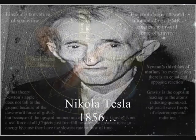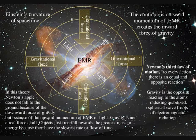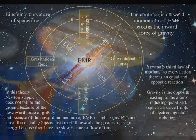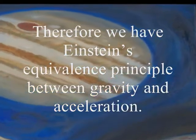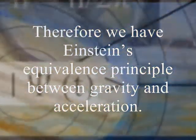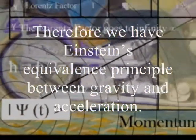In this theory, gravity is a secondary force to the electromagnetic force. Objects just freefall towards the greatest mass or energy, because it has the slowest rate that time flows.